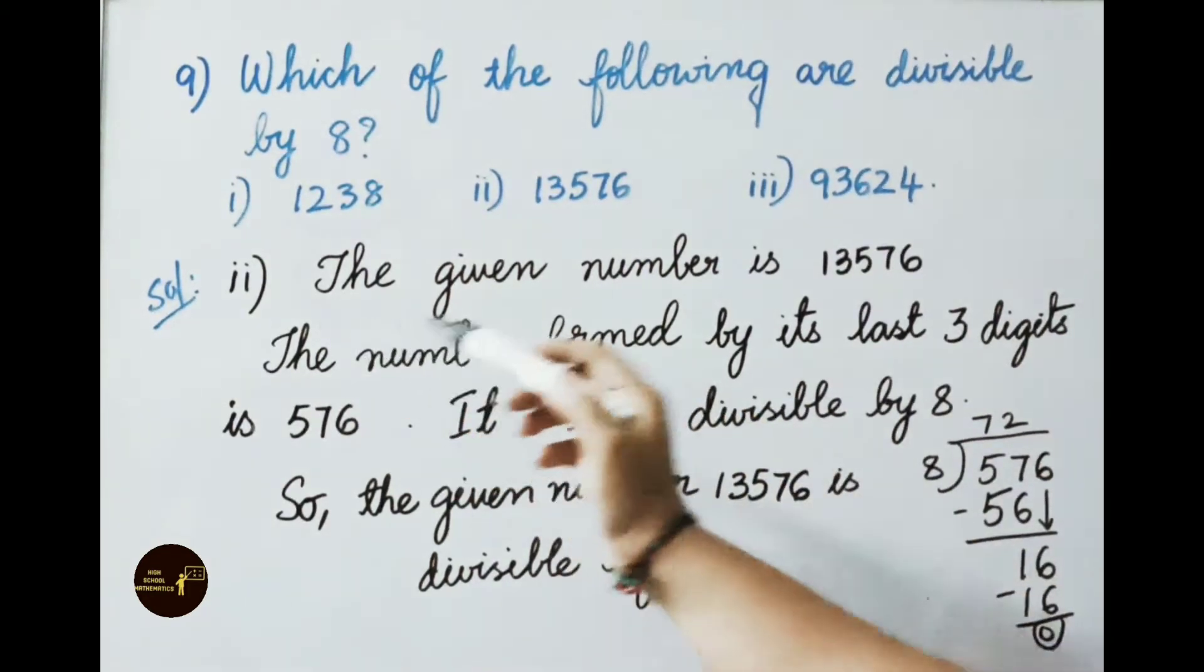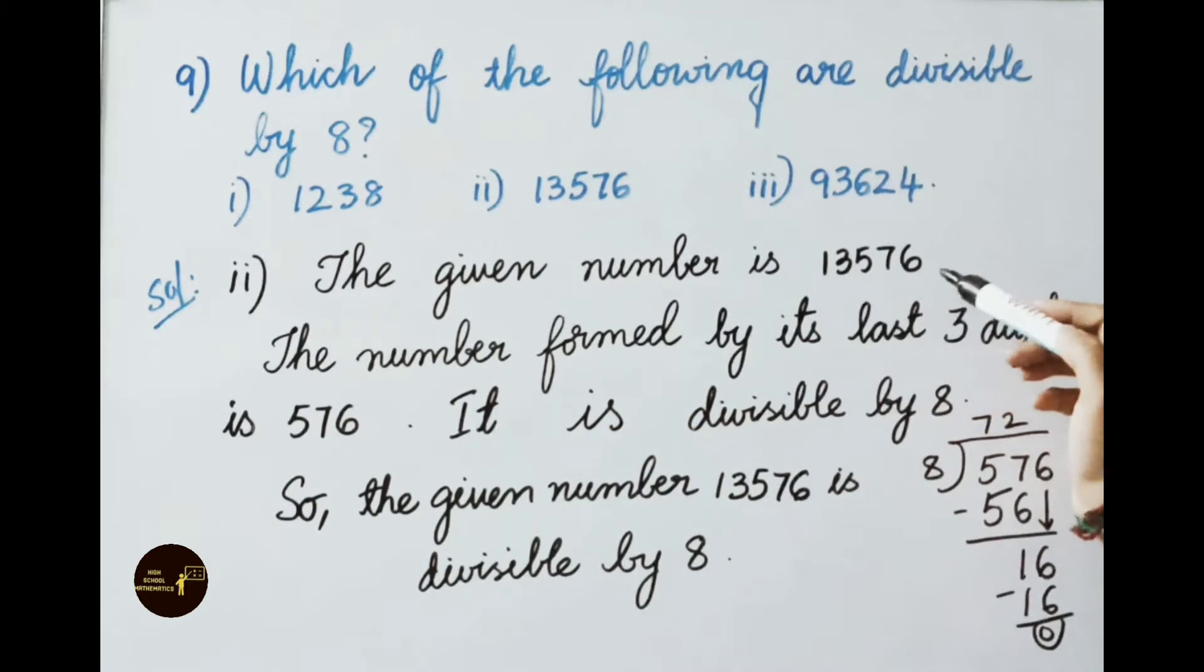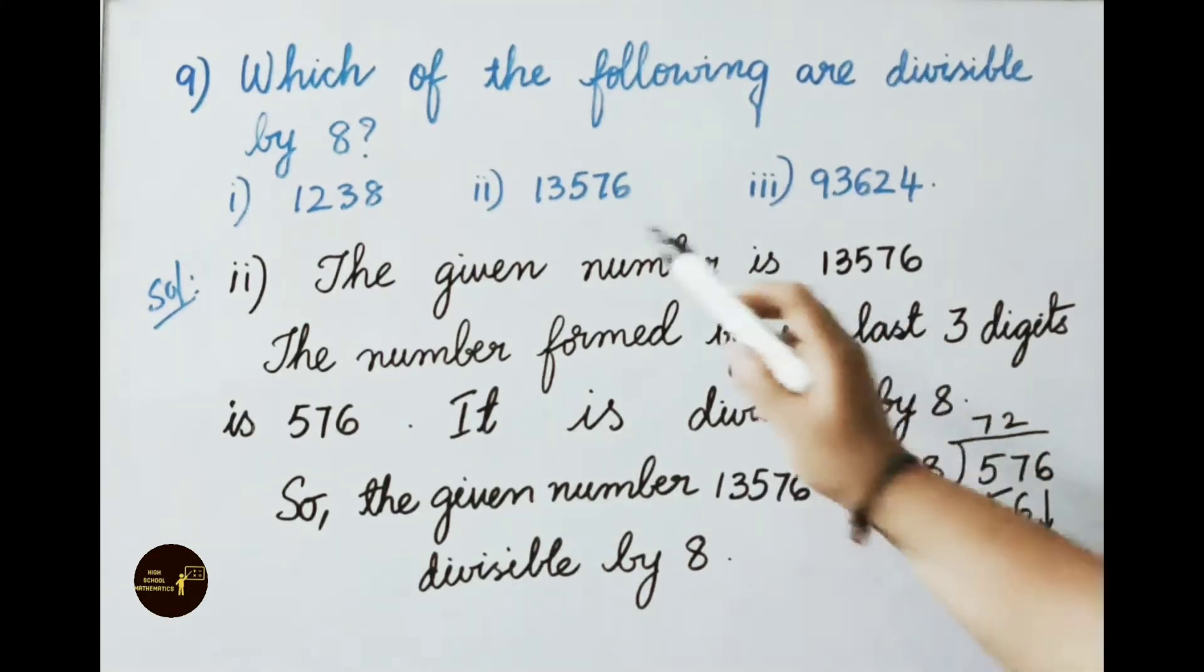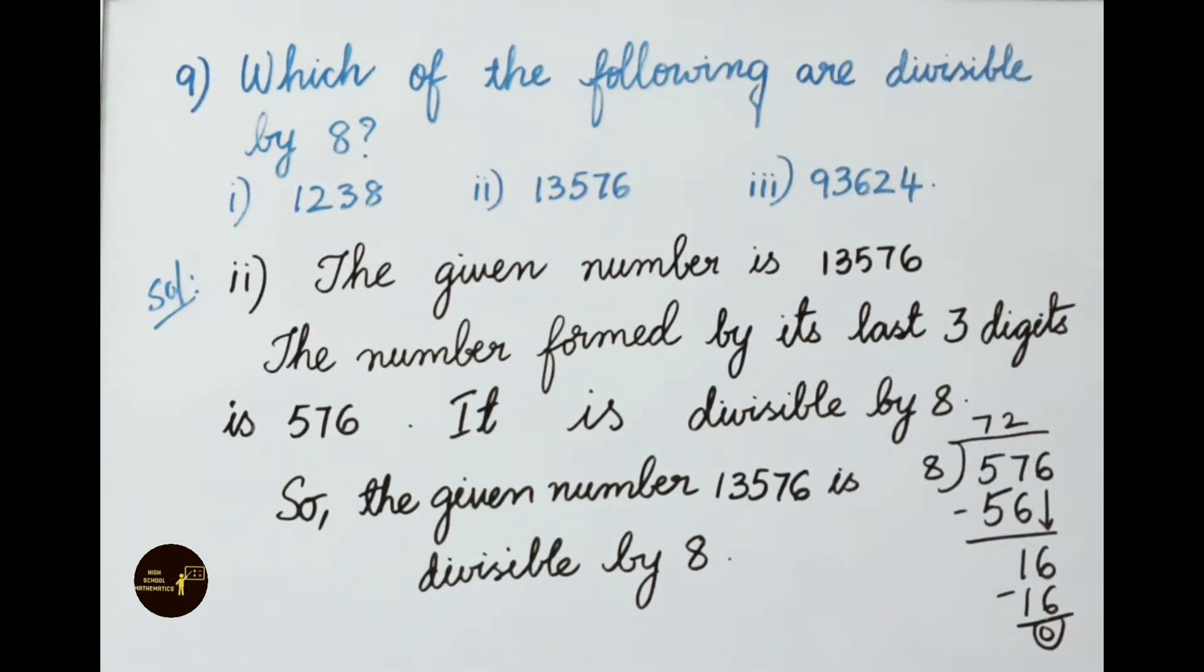See the second sum. The given number is 13576. Let us check this by doing actual division. 576 divided by 8. 8 sevens are 56. 57 minus 56 is 1. Write on the next digit 6. 8 twos are 16. 16 minus 16 leaves a remainder 0. Therefore 576 is divisible by 8. So the given number 13576 is also divisible by 8.